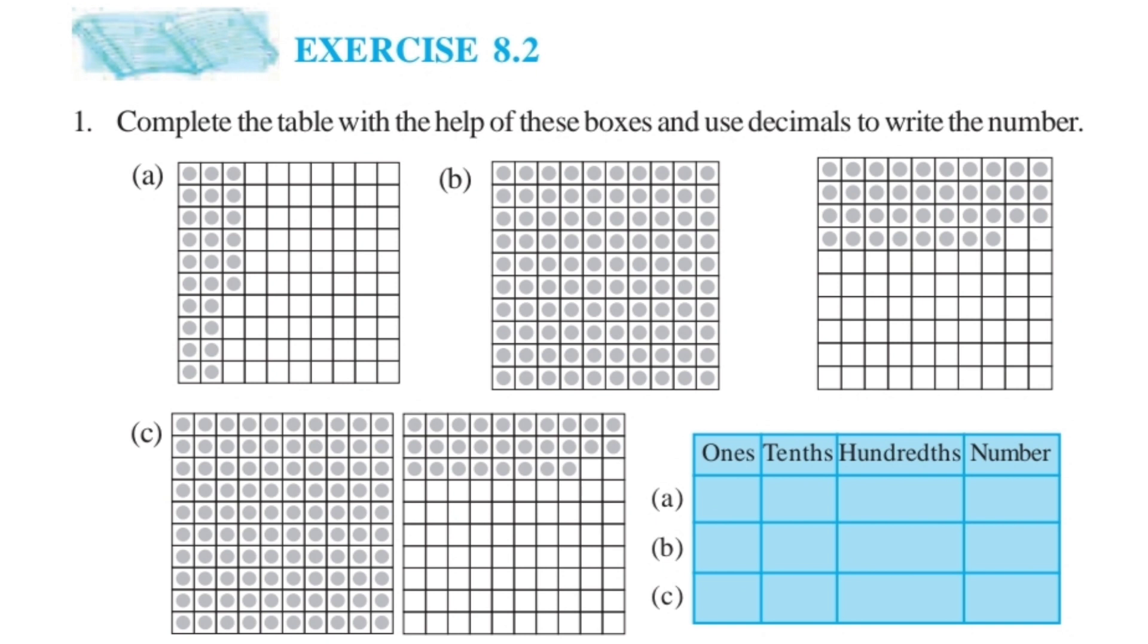First one: the table has 100 parts with all shaded parts. One line equals 10, so two complete lines equals 20. Then counting the remaining boxes: 1, 2, 3, 4, 5, 6 boxes shaded, giving 26.